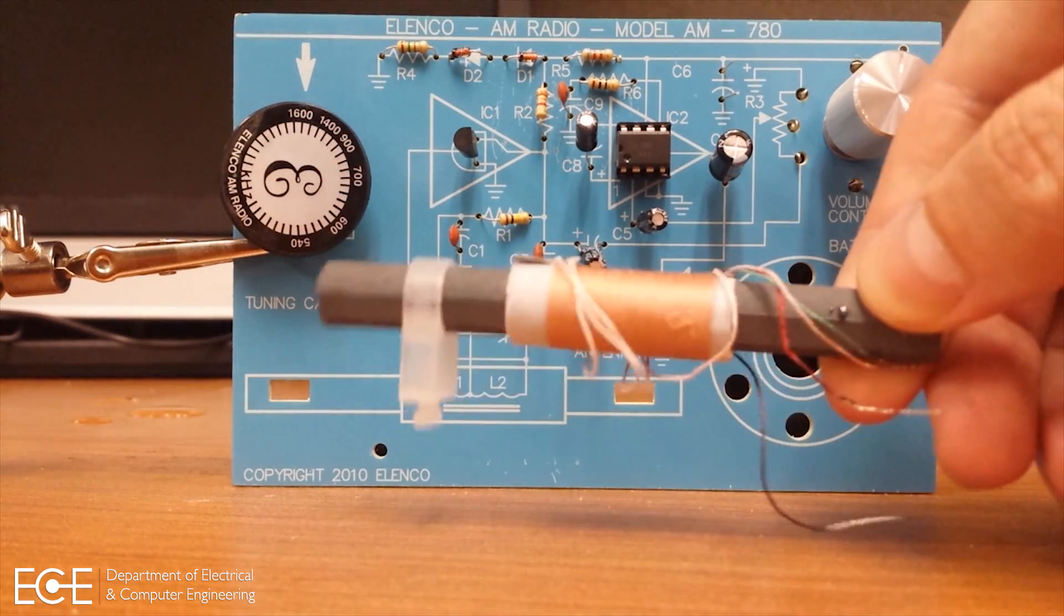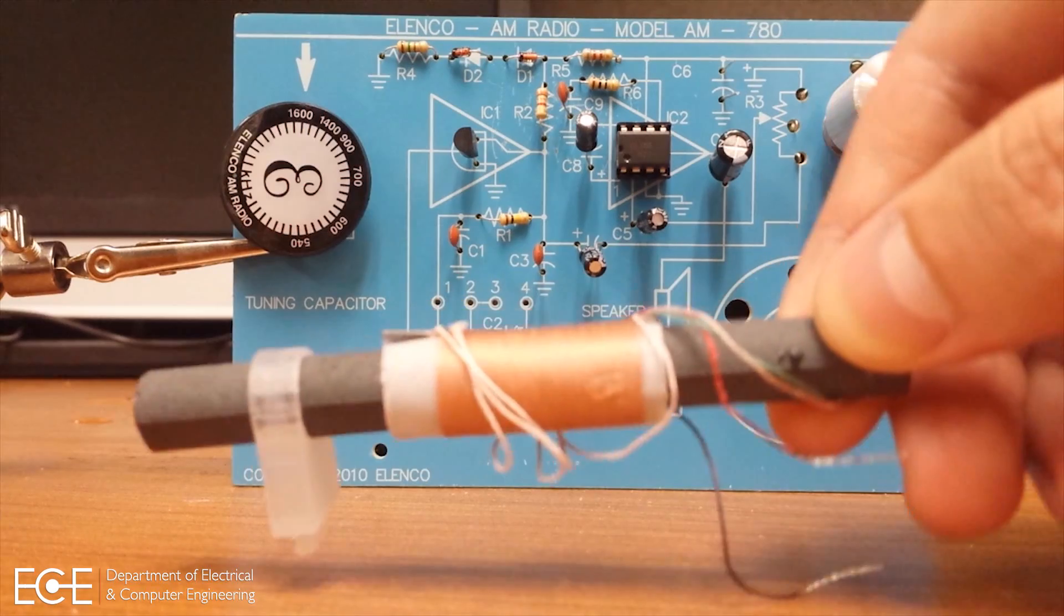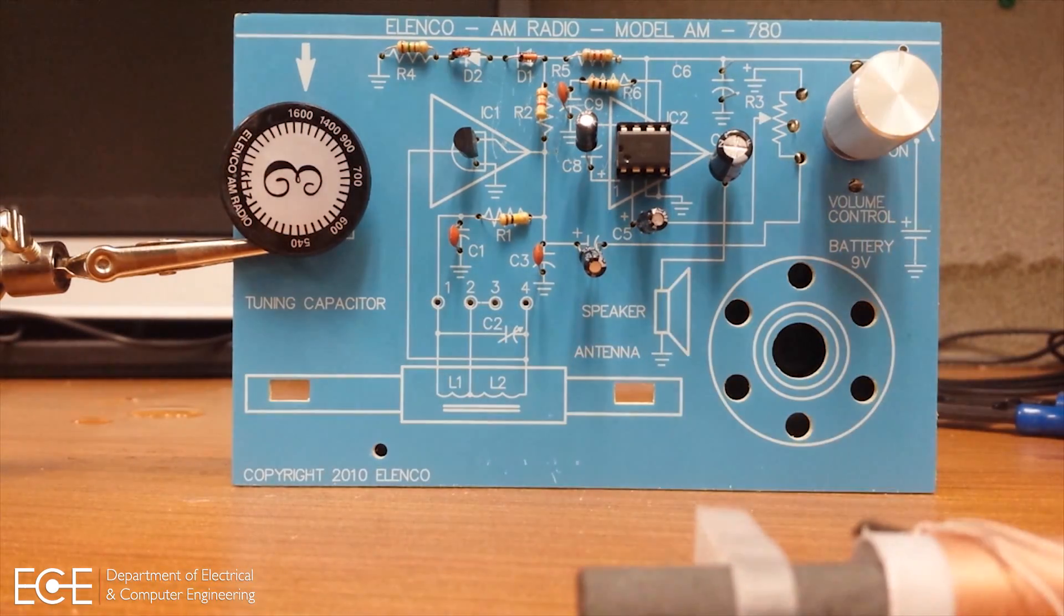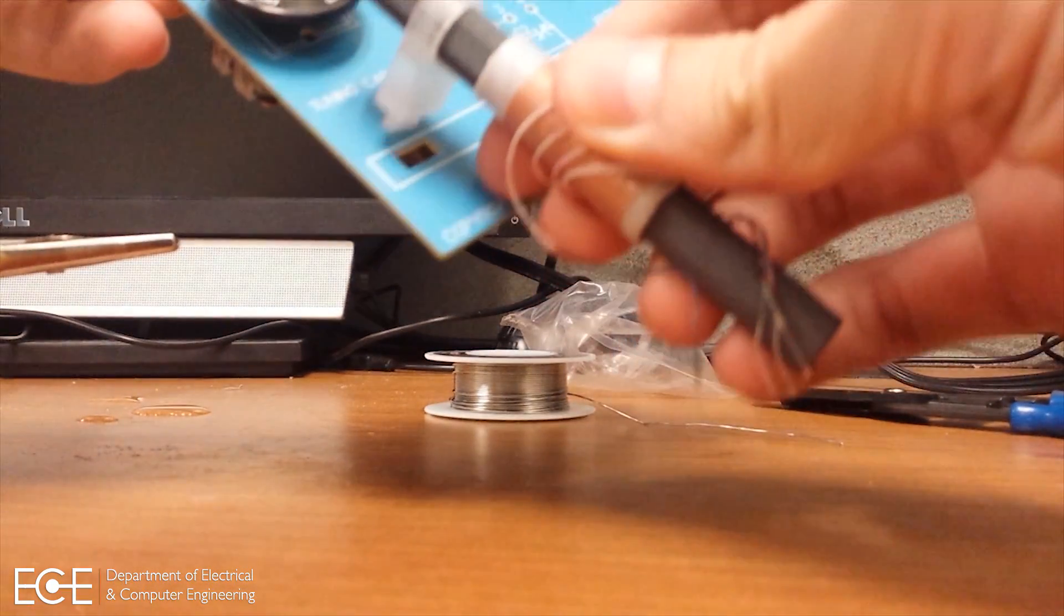Your ferrite rod comes with inductive coils wrapped around it. It also has 4 wires that you need to place through the PCB. Wire number 1 is the green wire, wire number 2 is the red, wire number 3 is blue, and wire number 4 is white.